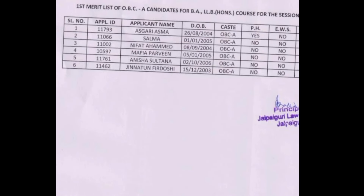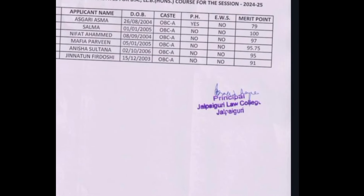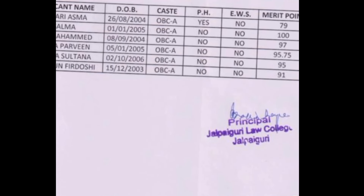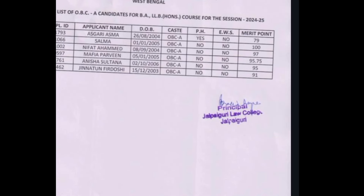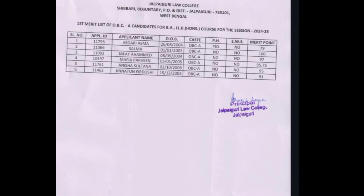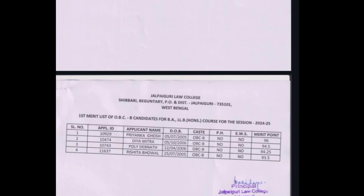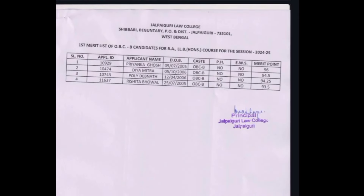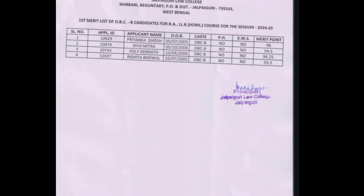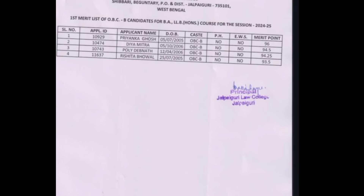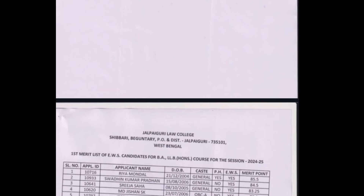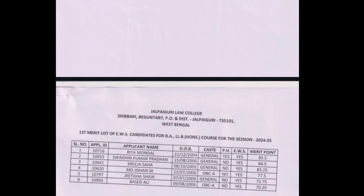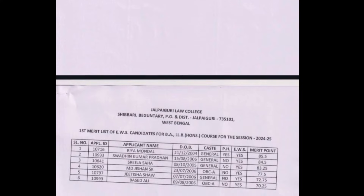Then you can see OBC-A. OBC-A has a PH candidate. There is also a PH candidate listed. Then you can see OBC-B category as well.